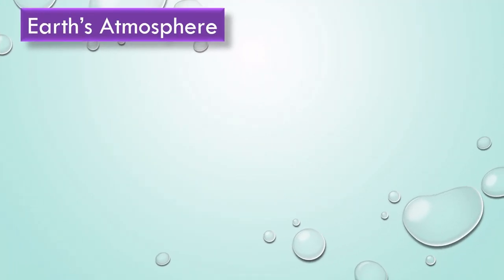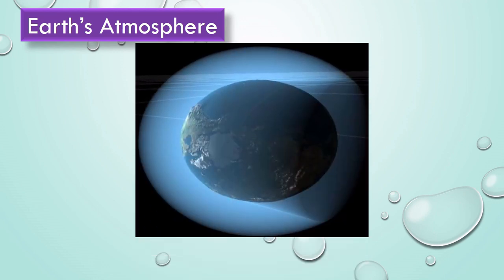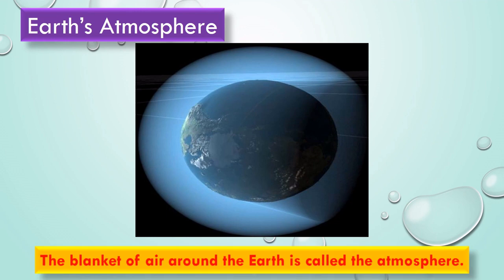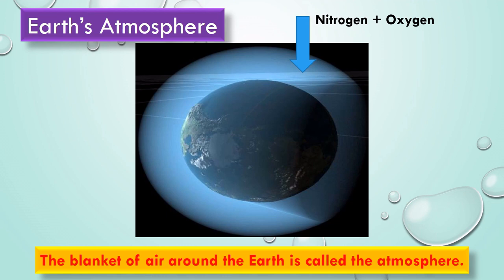Now, let us learn about Earth's atmosphere. The blanket of air around the Earth is called the atmosphere. Air means it is a type of gas. That atmosphere is mainly made up of two gases, that is oxygen and nitrogen. Due to this oxygen, we have a life and we can survive on the Earth.